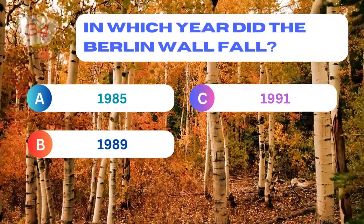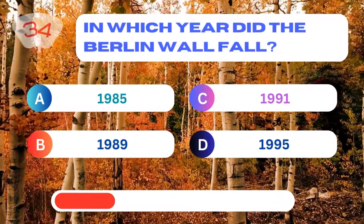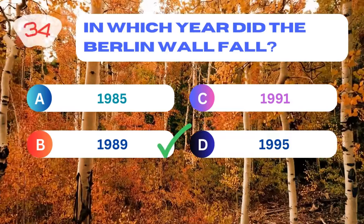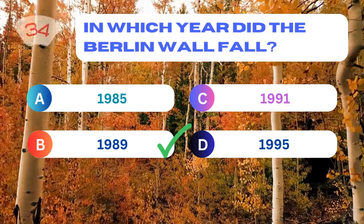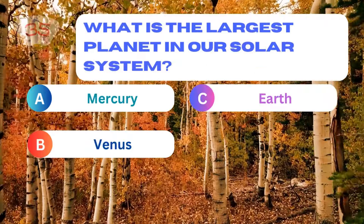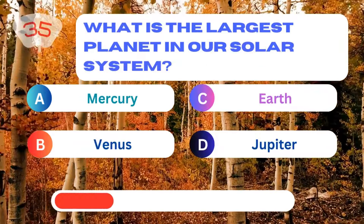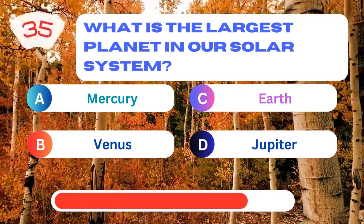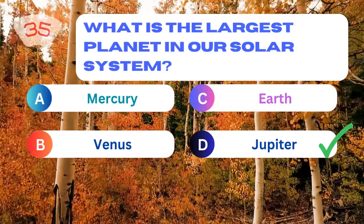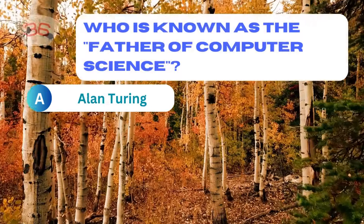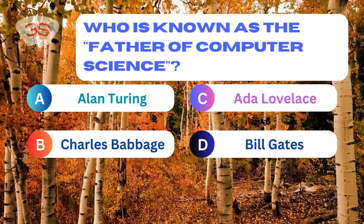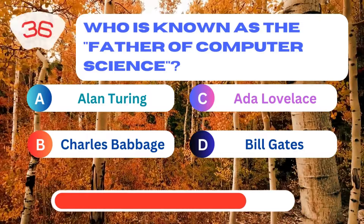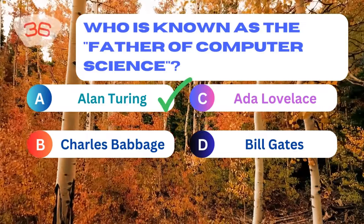In which year did the Berlin Wall fall? 1989. What is the largest planet in our solar system? Jupiter. Who is known as the father of computer science? Alan Turing.